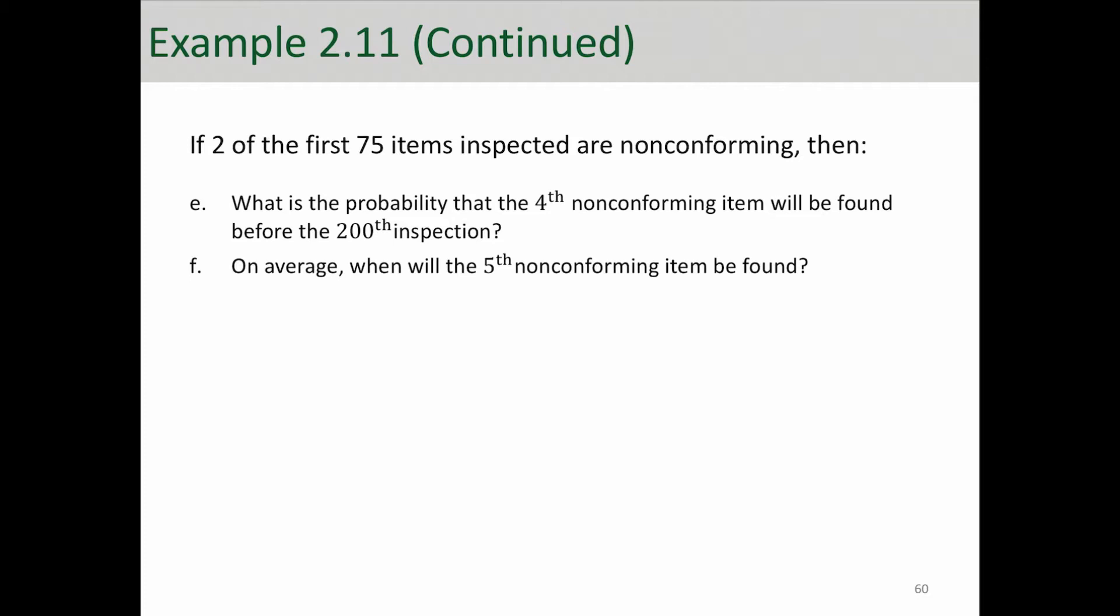So here we have this new condition, and we want to calculate what is the probability that the fourth non-conforming item will be found before the 200th inspection. Well, it says before, and it's the fourth non-conforming item, so it's T4, before is less than 200th inspection.